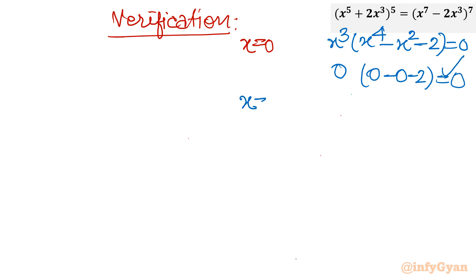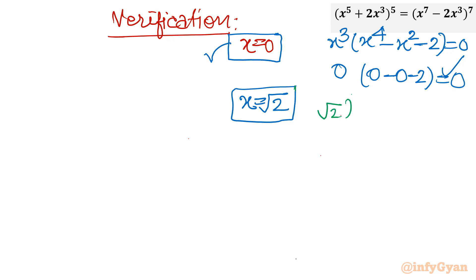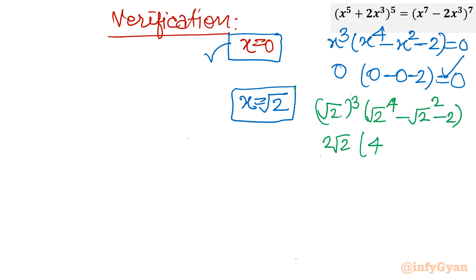Now let us check x = √2. Substituting: (√2)³ · ((√2)⁴ - (√2)² - 2) = 2√2 · (4 - 2 - 2) = 2√2 · 0 = 0. Since -2 - 2 = -4 cancels with 4, the bracket equals 0, so x = √2 is also a valid solution.